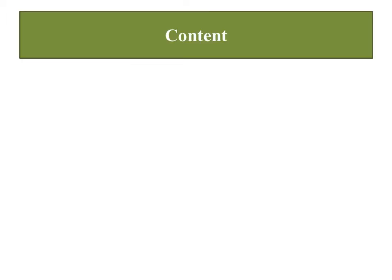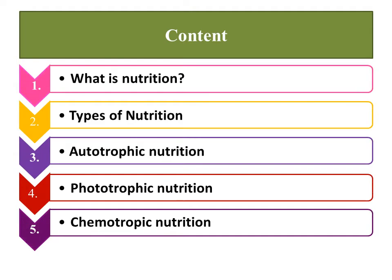Students, I have prepared this chapter in three parts including only the botany portion. In this part 1, I will discuss with you what is nutrition, then its types of nutrition. The first type of nutrition I am going to discuss is autotrophic nutrition and its further subdivisions: phototrophic nutrition and chemotrophic nutrition.